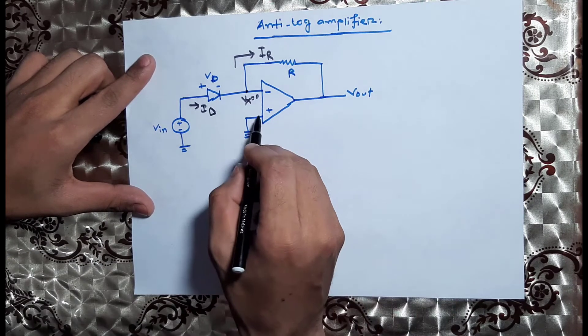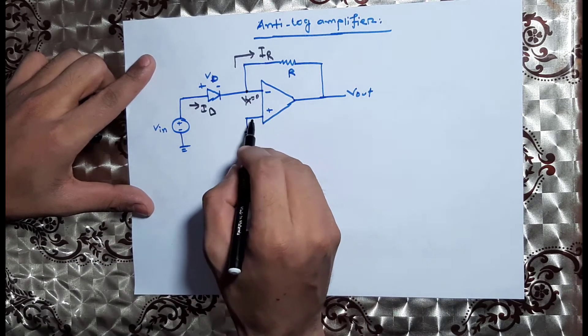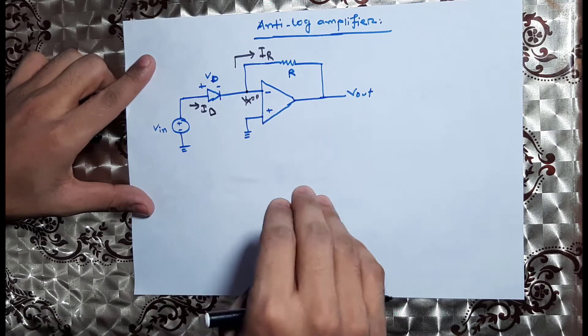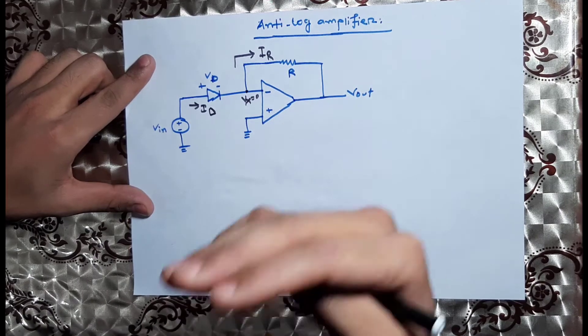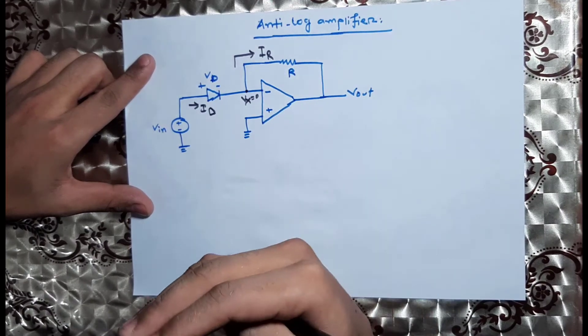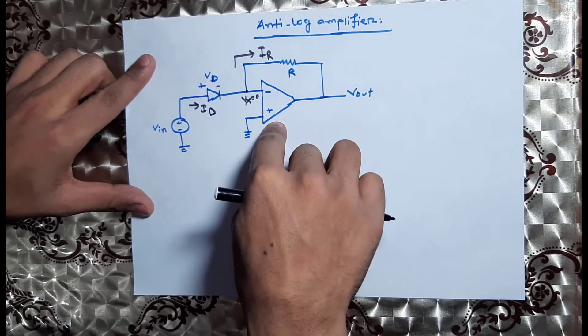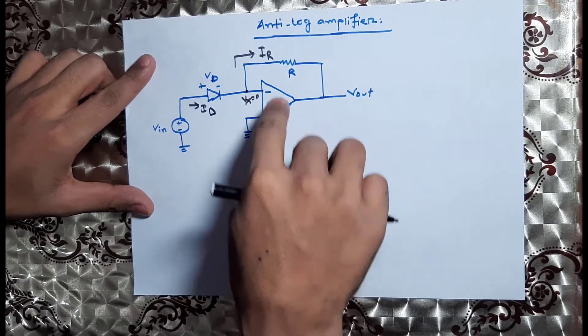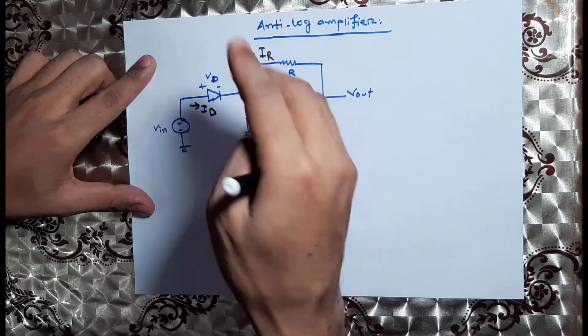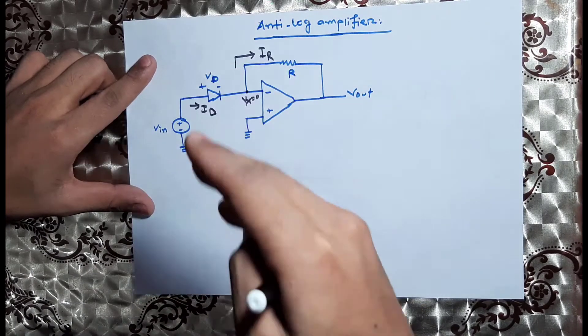Now we choose the diode configuration. This is the virtual ground concept — at the inverting or non-inverting terminal, the potential is the same, and if we are grounded, we will have a virtual short.